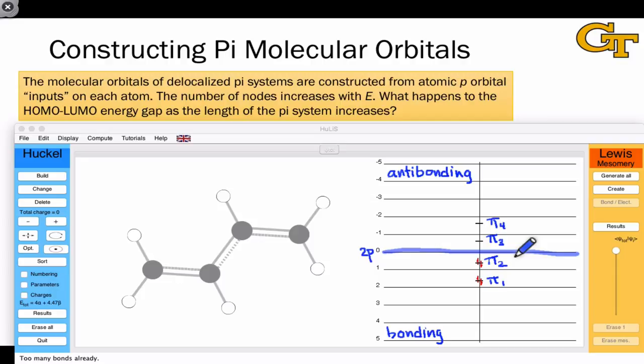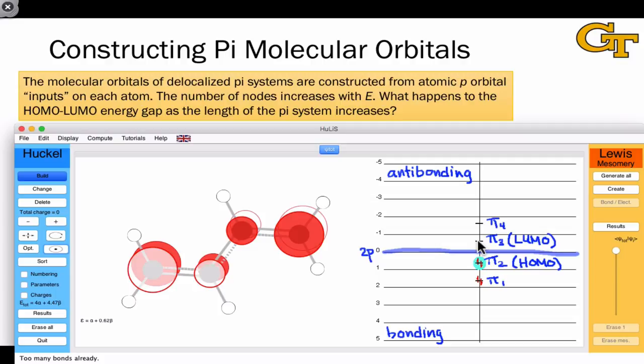Notice what's happened to the gap between the highest occupied molecular orbital, here pi two, and the lowest unoccupied molecular orbital, here pi three. The gap has shrunk from about two units down to about 1.2 units. That's a considerable contraction in the HOMO-LUMO energy gap. Let's take a look at the shapes now.